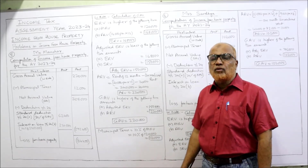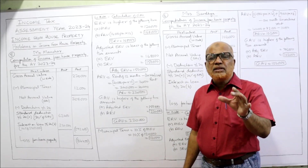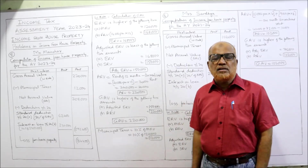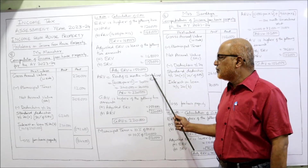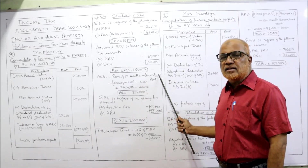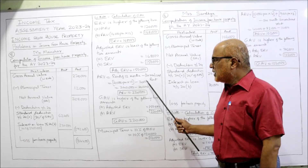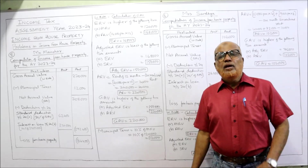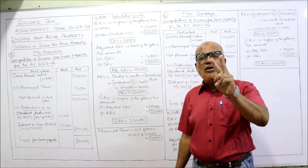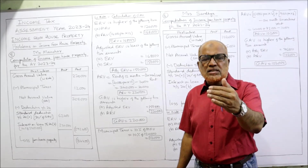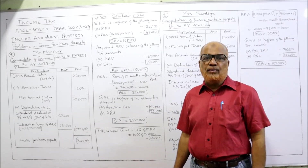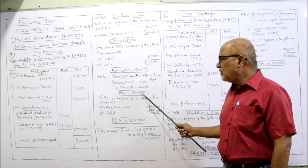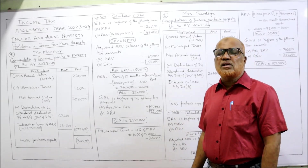Now ARV — actual rental value — is rent for 12 months: 20,000 per month into 12 equals 2,40,000. But the last month, March, he has not paid and vacated, which is unrealized rent. So minus 20,000 — ARV is 2,20,000. Finally, GAV is the higher of adjusted ERV or ARV: adjusted ERV is 1,50,000 and ARV is 2,20,000. The higher is 2,20,000, so GAV is 2,20,000.